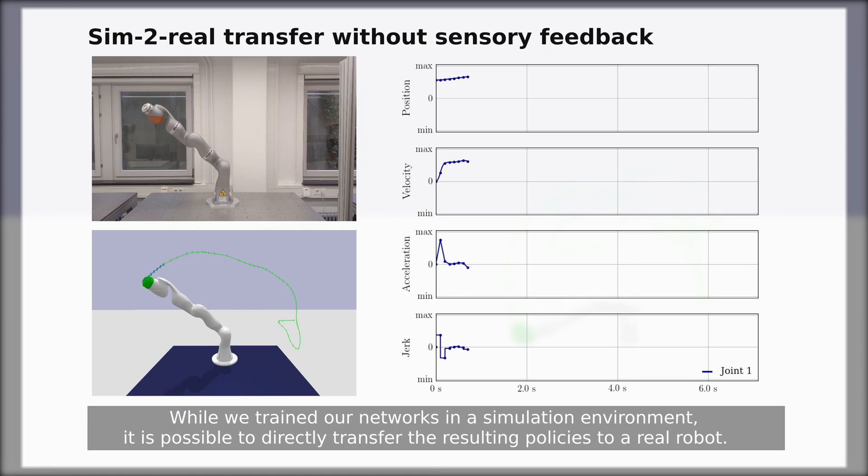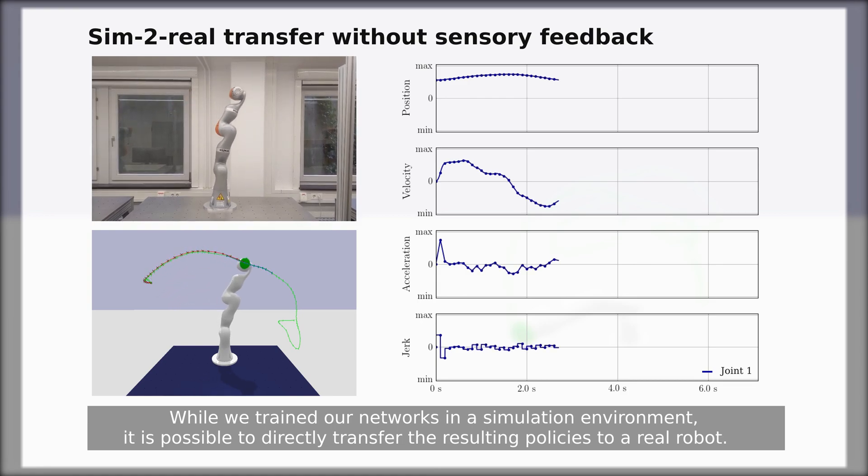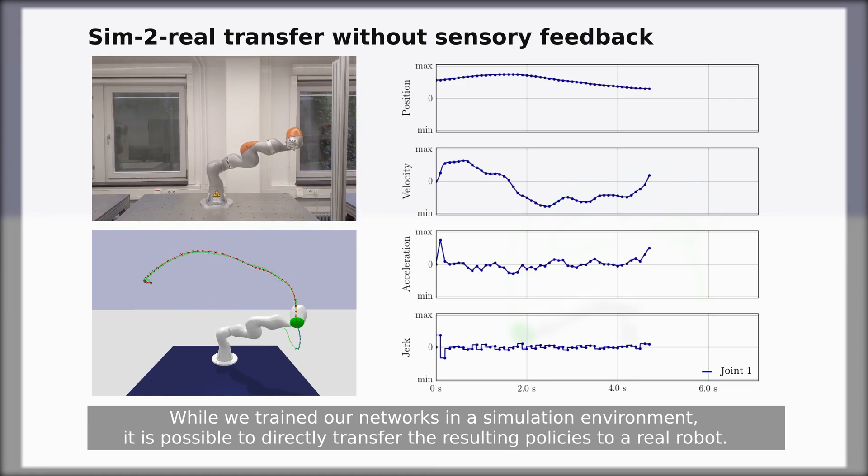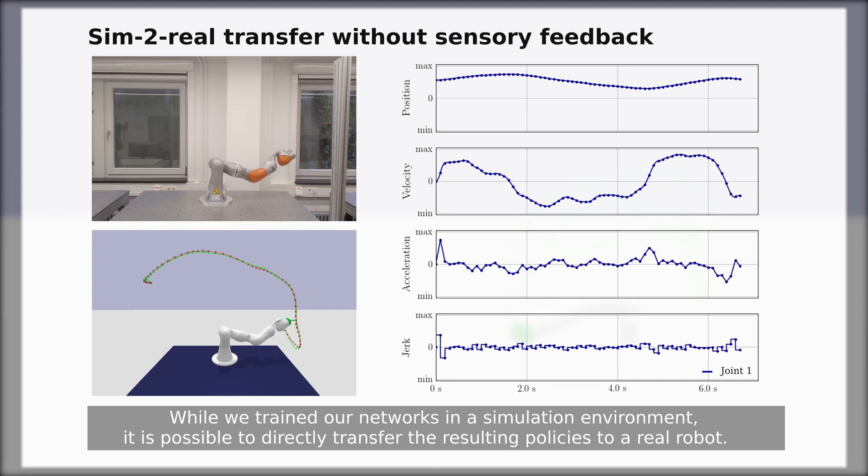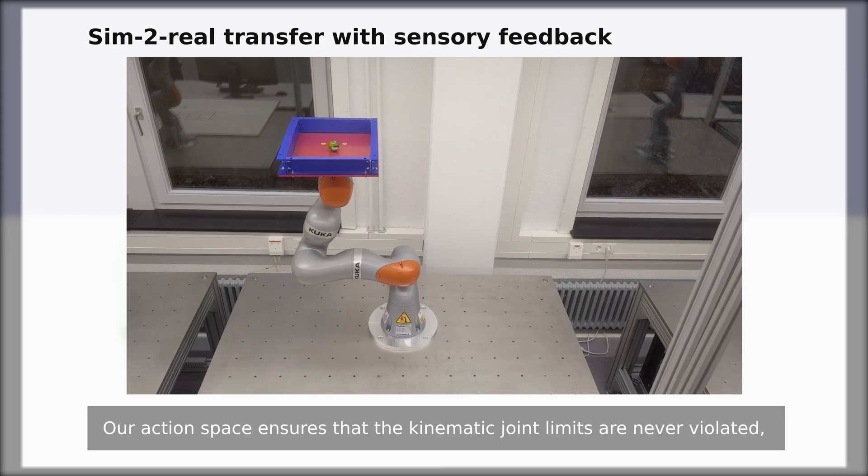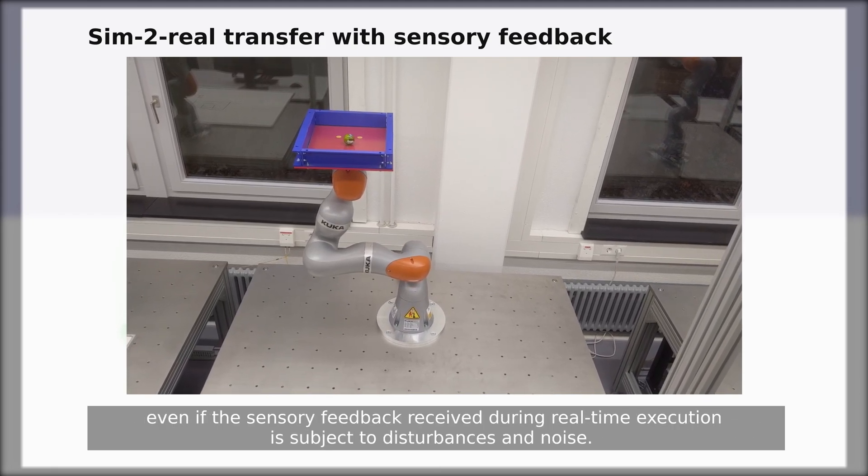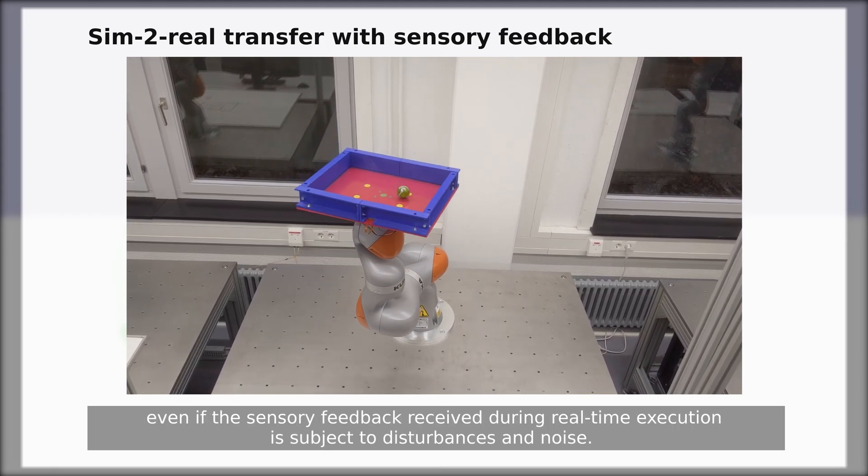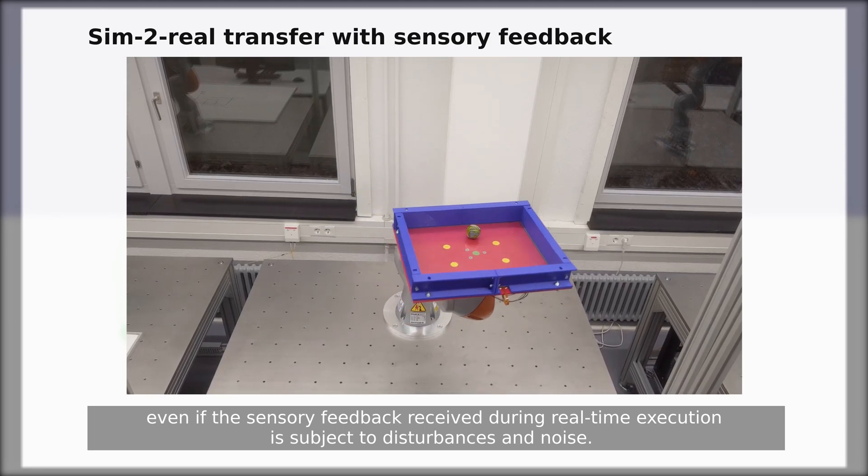While we trained our networks in a simulation environment, it is possible to directly transfer the resulting policies to a real robot. Our action space ensures that the kinematic joint limits are never violated, even as the sensory feedback received during real-time execution is subject to disturbances and noise.